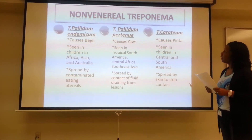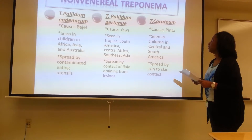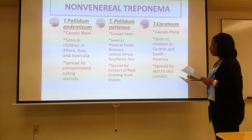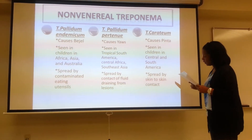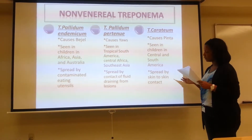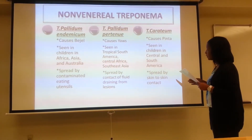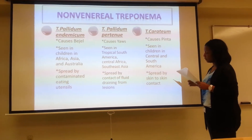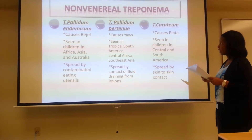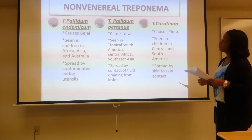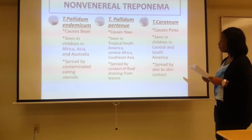Treponema carateum causes a disease called pinta. It is seen in children in Central and South America and is generally spread by skin-to-skin contact. In pinta, after one to three weeks of incubation, hard, raised lesions called papules form at the site of infection. The papules enlarge and persist for months to years, and can result in scarring and disfigurement. Overall, these diseases all cause different types of lesions and papules, some painful and some painless.